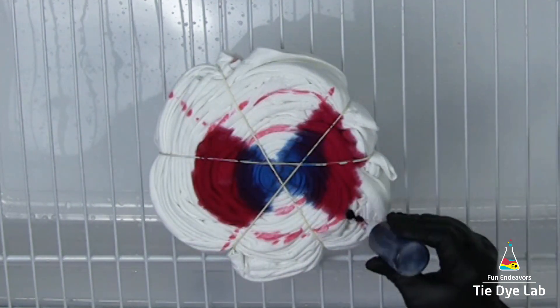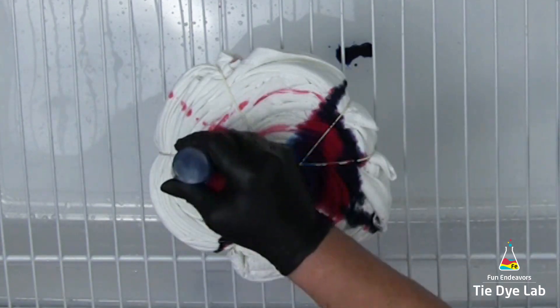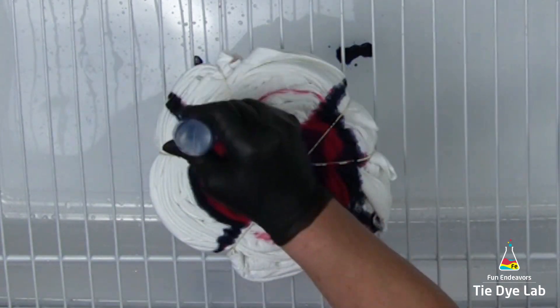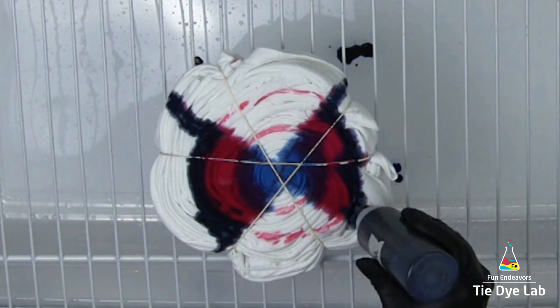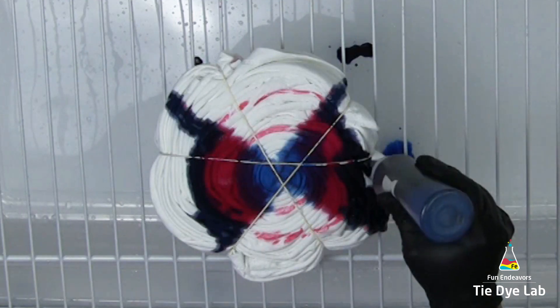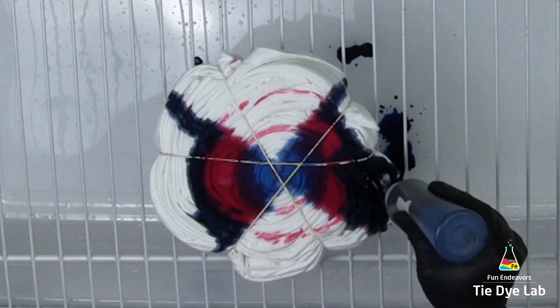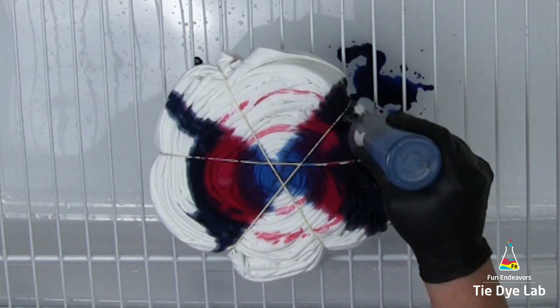The last section on these two areas, I'm using Grecian Sea from Dharma Trading Company. I'm going to make sure and add dye to the sides of this shirt as well as just the top. I'm adding quite a bit of dye to each of these areas, but I'm not oversaturating because I want to get all of the dye placement in there before I add too much additional dye.